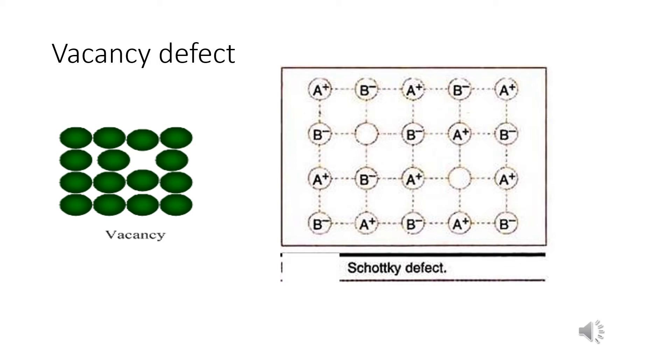Thus, this defect can also develop when the substance is heated. For example, Schottky defect is one of the vacancy defects. In Schottky defect, it is basically a vacancy defect in ionic solids. In order to maintain electrical neutrality, the number of missing cations and anions are equal.